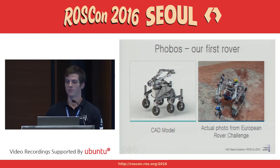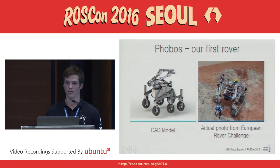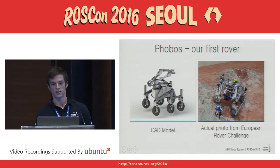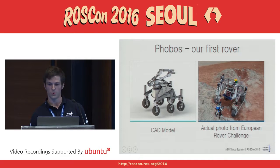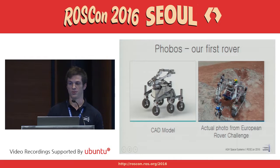Our first rover, Phobos, has a rocker-bogie suspension known for example from the Curiosity Rover. Its motor drivers communicate via CAN interface and can be added or removed without any effort. We used two onboard computers: Raspberry Pi for communication and control, and a laptop for stereo vision and visual odometry.